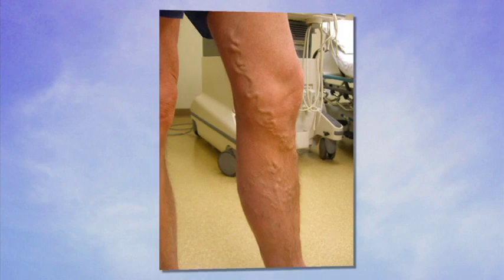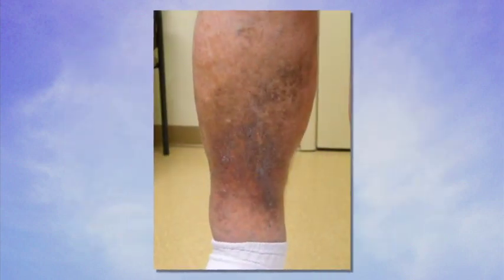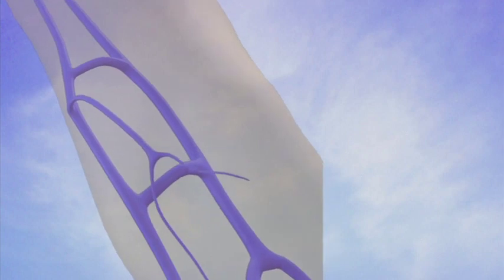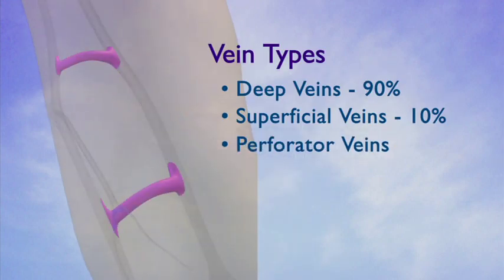Malfunctioning superficial veins often cause pain, heaviness, skin changes, and even skin ulcerations. Connecting the deep and the superficial veins are a third type of vein, the perforator veins. Incompetent perforators can also cause significant complications, including skin ulcerations.